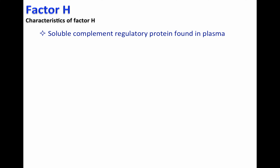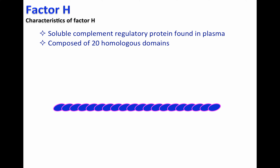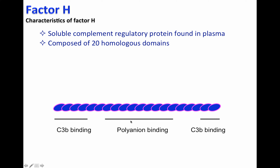Factor H is a soluble complement regulatory protein found in plasma. It is composed of 20 homologous domains, as you can see here in this figure. Factor H contains at least two sites that are able to recognize C3B and also recognize the polyanion expressed on the cell surface of host cells.